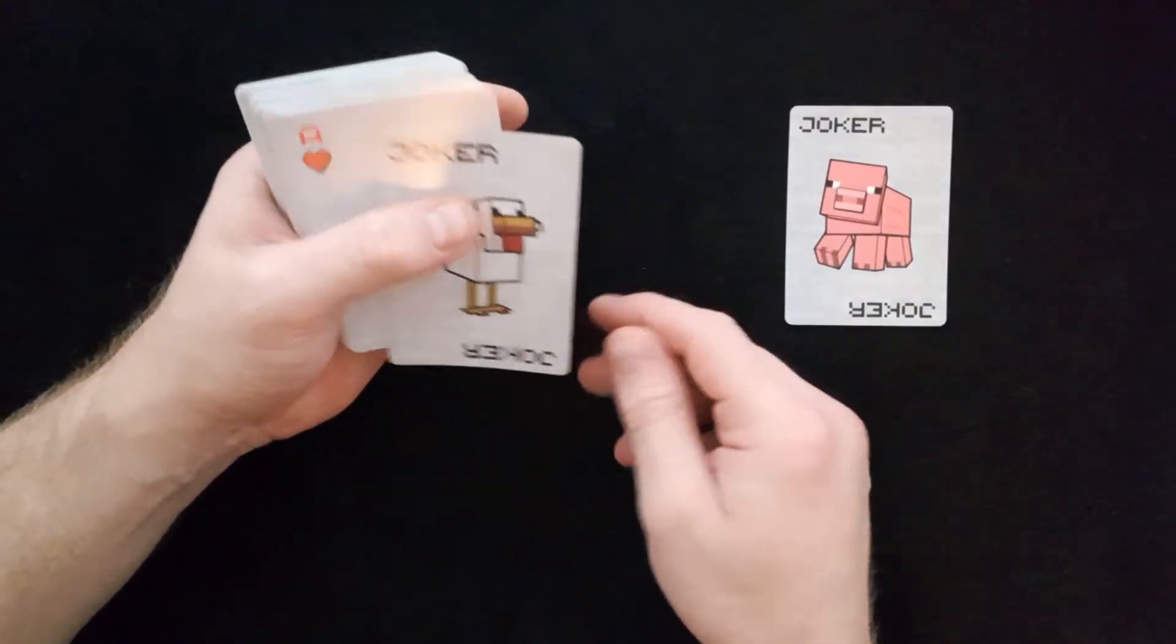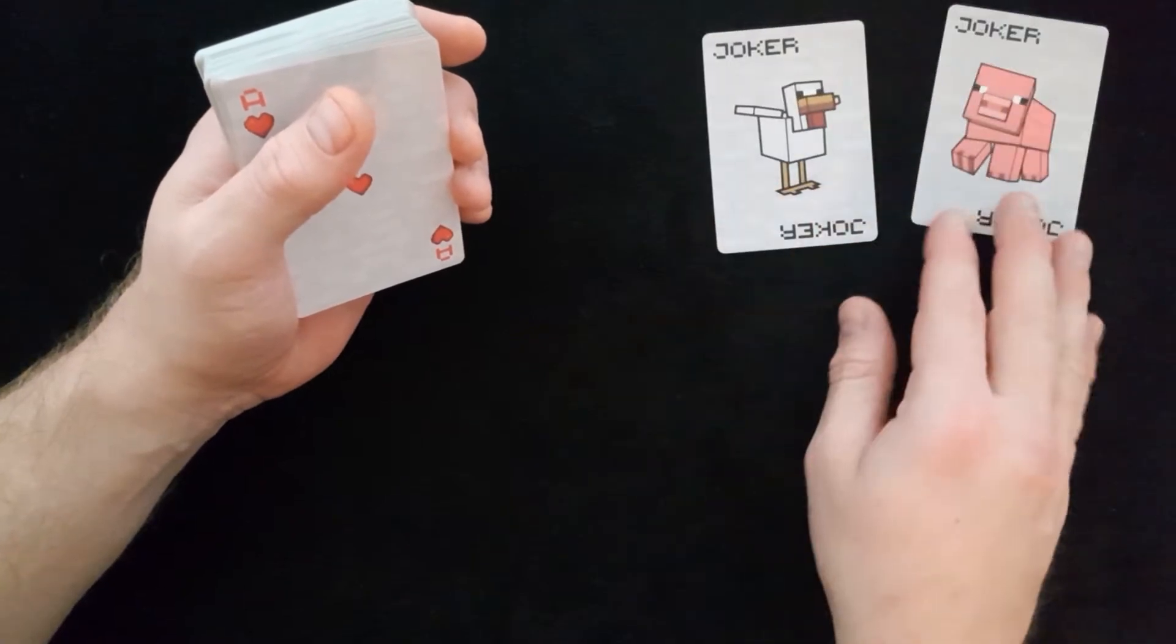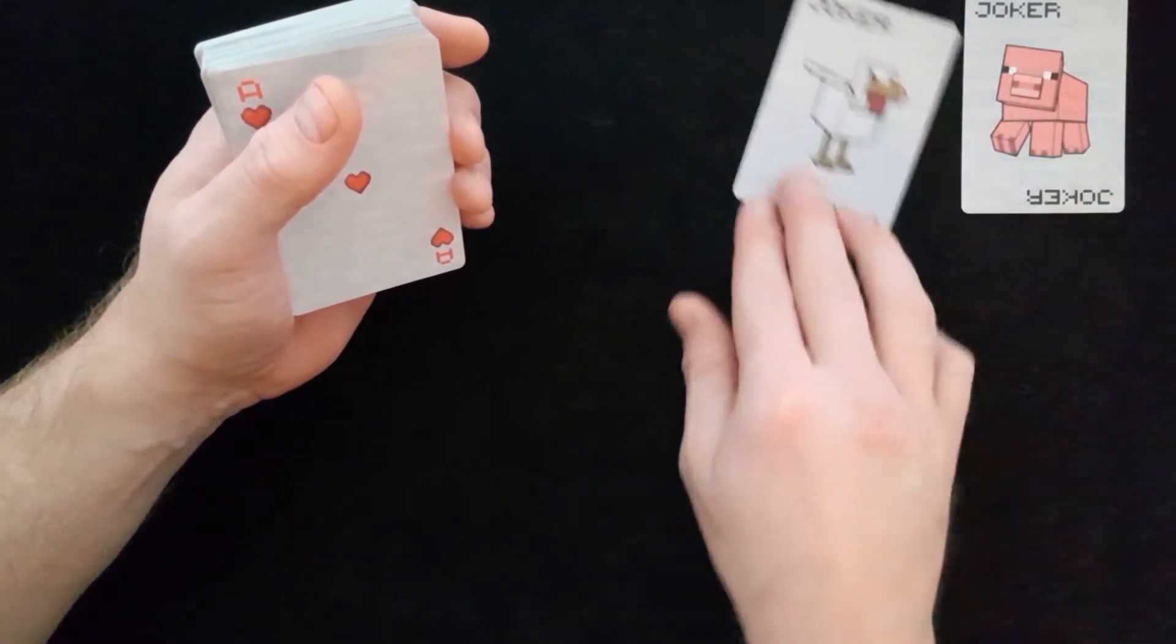A joker. Joker. Who's this? What character is that? It's a pig. So we've got a pig as a joker and what's that? A chicken as a joker too. So we've got a chicken and a pig which is a bit different there for the joker cards.